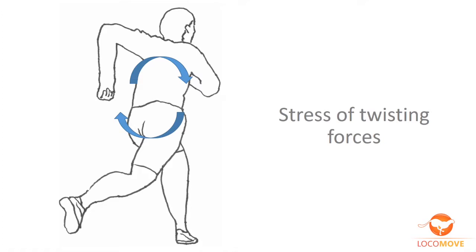Some runners rotate the pelvis, having the standing leg side back and the swinging leg side ahead. At the same time, the thoracic spine tends to be rotated in the opposite direction as arms swing back, so the lumbar spine is exposed to a stress of twisting forces.